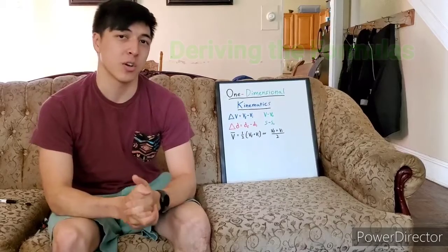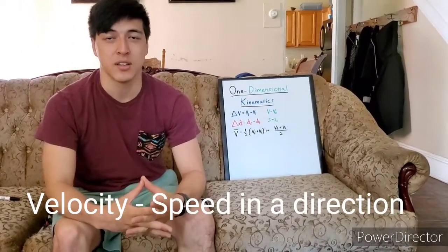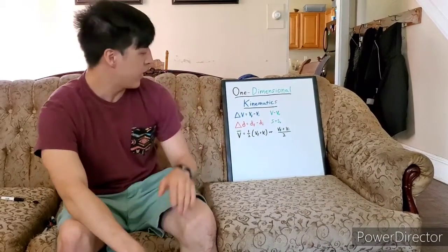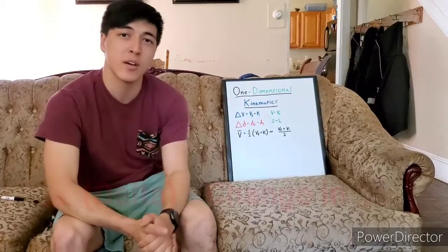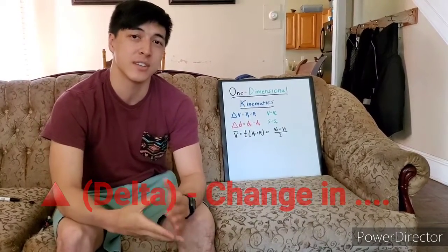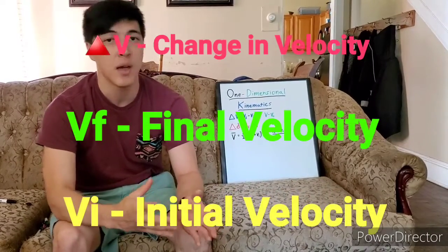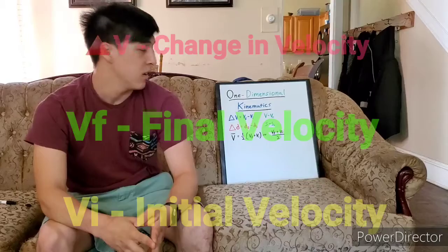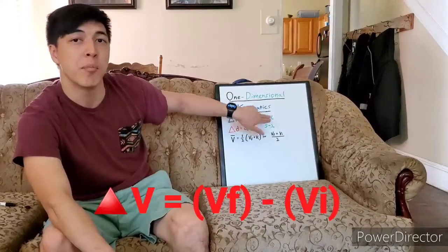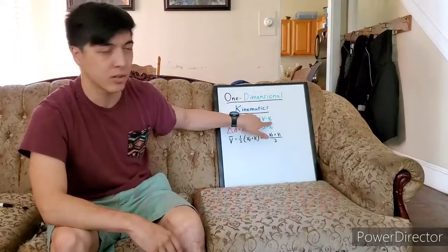The first thing we're going to talk about is velocity. Velocity is the speed of something, and we denote velocity with V. This triangle symbol in front of it is delta — delta means change in something. So the change in velocity is equal to the final velocity minus the initial speed. In most textbooks, you'll see that it's V minus V₀, where V₀ is that little degree symbol.